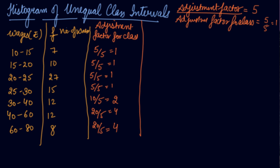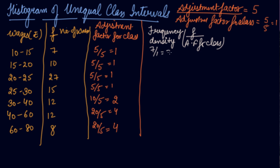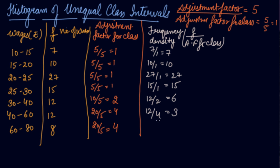Now we find out the frequency density by dividing the frequency by the adjustment factor for each class. So: 7 divided by 1 = 7, 10 divided by 1 = 10, 27 divided by 1 = 27, 15 divided by 1 = 15, 12 divided by 2 = 6, 12 divided by 4 = 3, and 8 divided by 4 = 2.